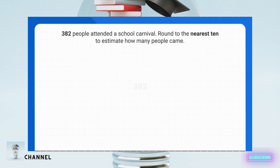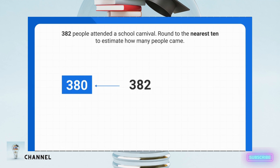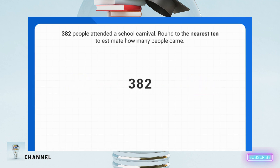The problem tells me that 382 people came, so I'm going to focus on that number. Then it tells me to round to the nearest 10. That means I'm trying to figure out if I'm rounding down to 380 or up to 390. To do that, I'm going to circle the tens place because that's what I'm rounding to.